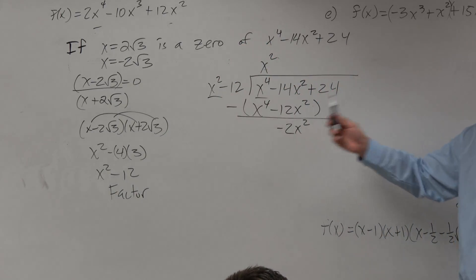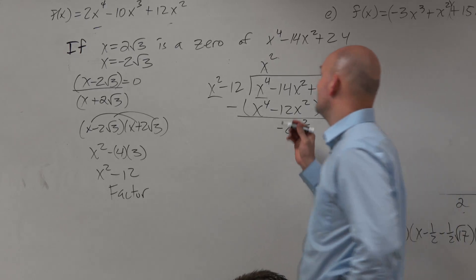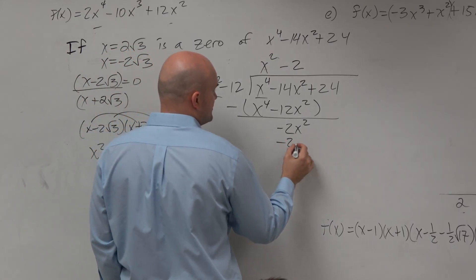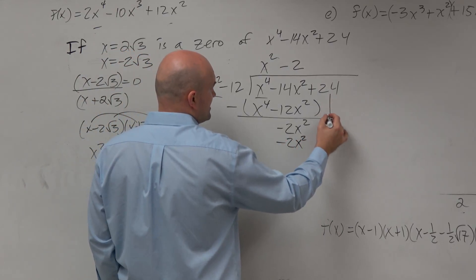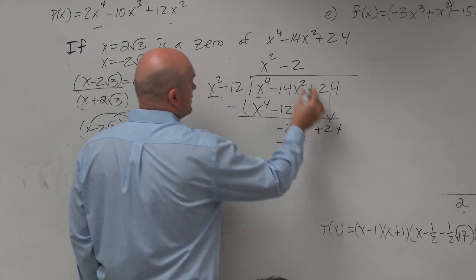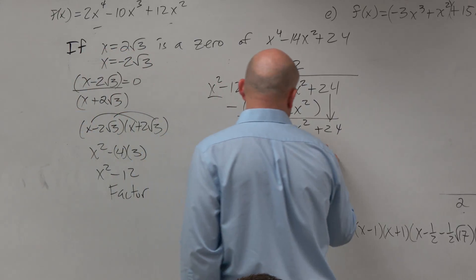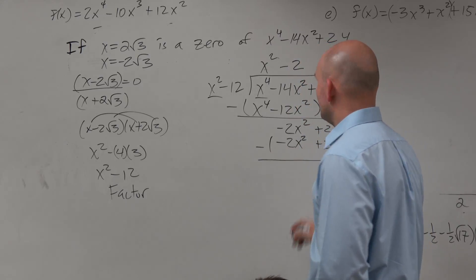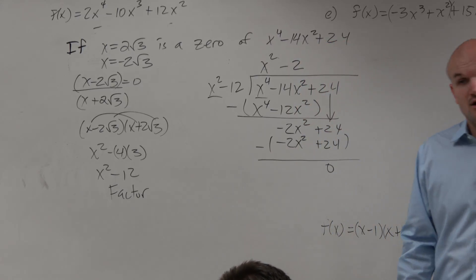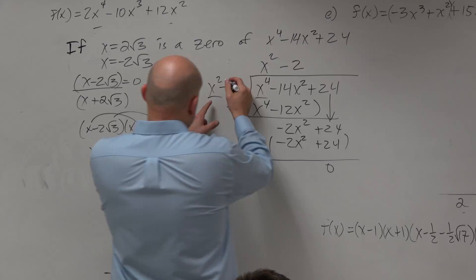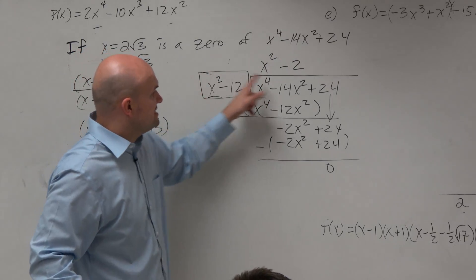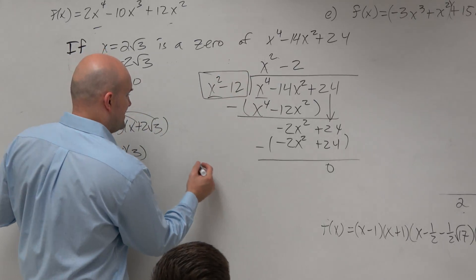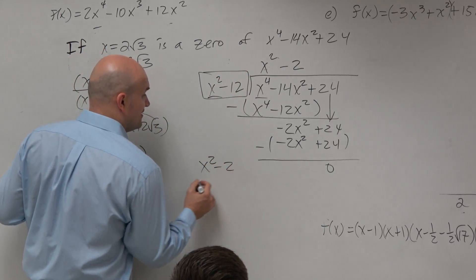How many times does x² divide into -2x²? -2 times. -2 times x² is -2x². You could bring down the 24. -2 times -12 is +24. Subtract the rows, and you get 0. So we already knew this was a factor, but this divides into that this many times. So this is also a factor.